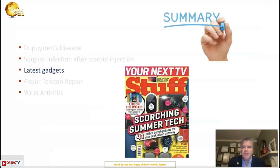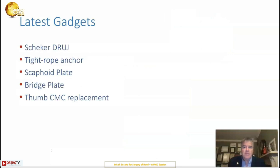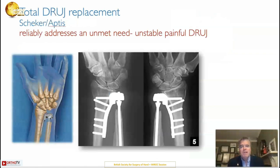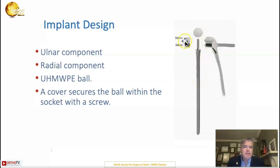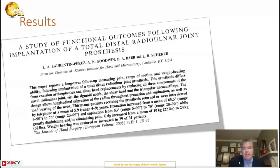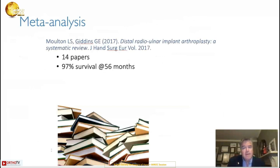Let's look at a few hand surgery gadgets. The total DRUJ replacement reliably addresses an unmet need — the unstable, painful DRUJ. Before this came along, we had no option for this particular condition. It's very, very clever. There's a polythene ball, a stem that goes up and down as you rotate the forearm, a long stem that osseointegrates, and then the DRUJ is reproduced in a stable fashion by this plate. As time has passed, we're getting more and more confident with results. A 2017 review showed a 97% survival rate over four years.